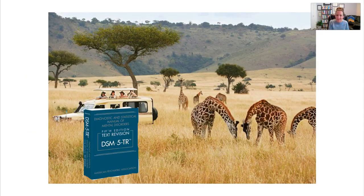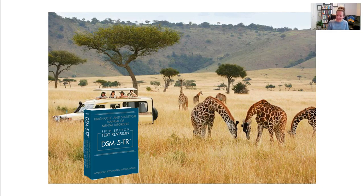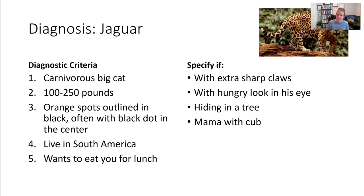Now let's go on DSM safari — bet you didn't see that coming. Let's say a clinical social worker and a zoologist co-authored a new bestseller, the DSM for Wild Beasts, and in that book you'd find the diagnosis of jaguar. The diagnostic criteria might say it has to meet the first three criteria listed, with four and five being optional.